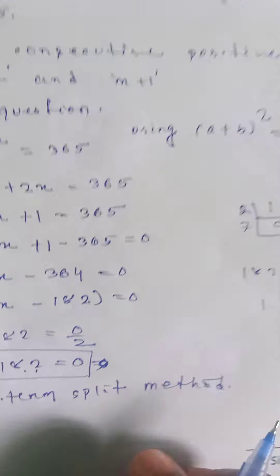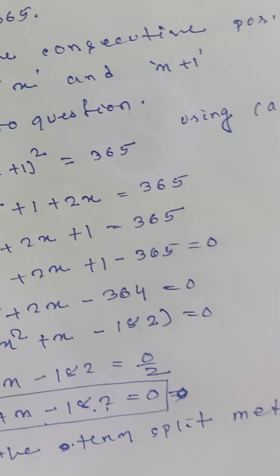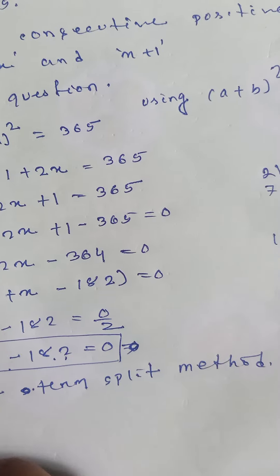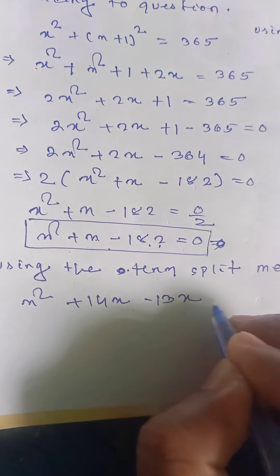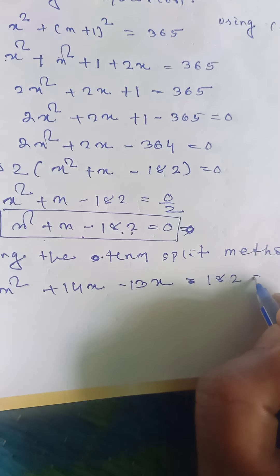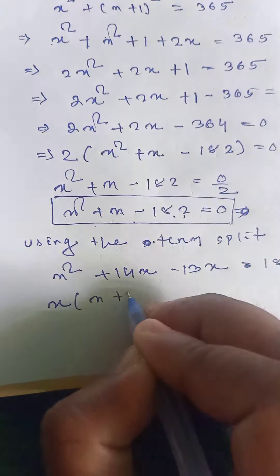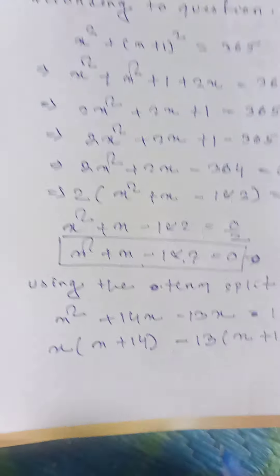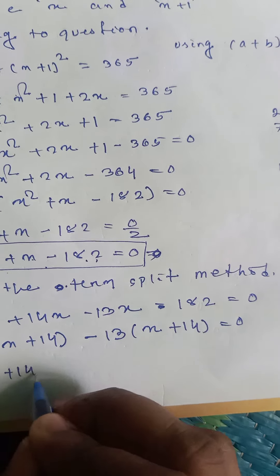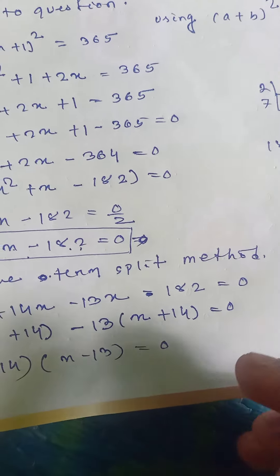So we split the middle term: x square plus 14x minus 13x minus 182 equals 0. Taking common: x(x plus 14) minus 13(x plus 14) equals 0, giving (x plus 14)(x minus 13) equals 0.